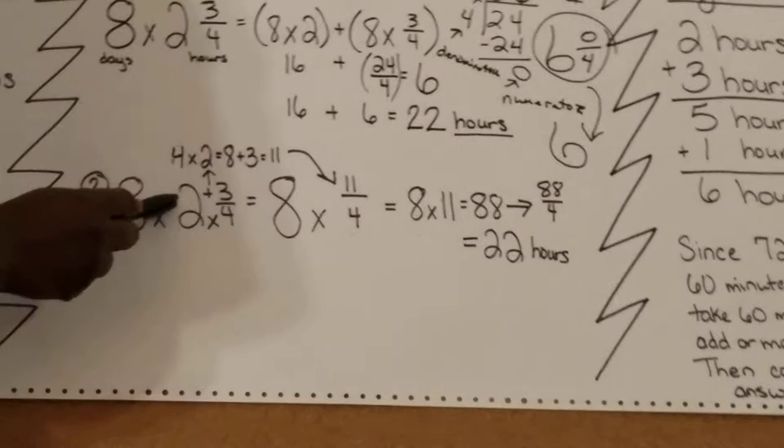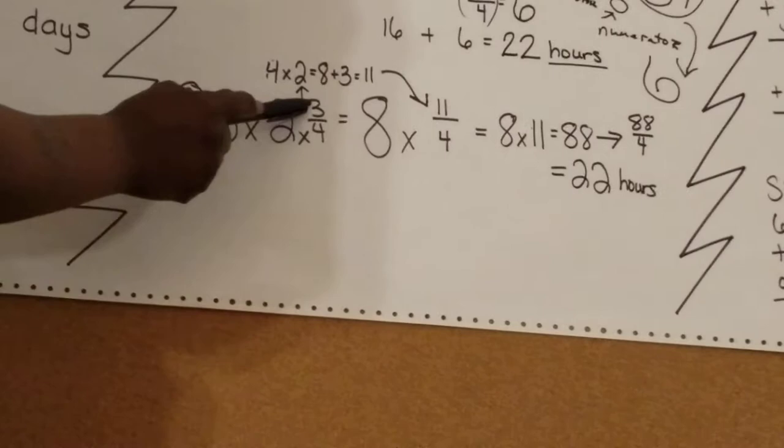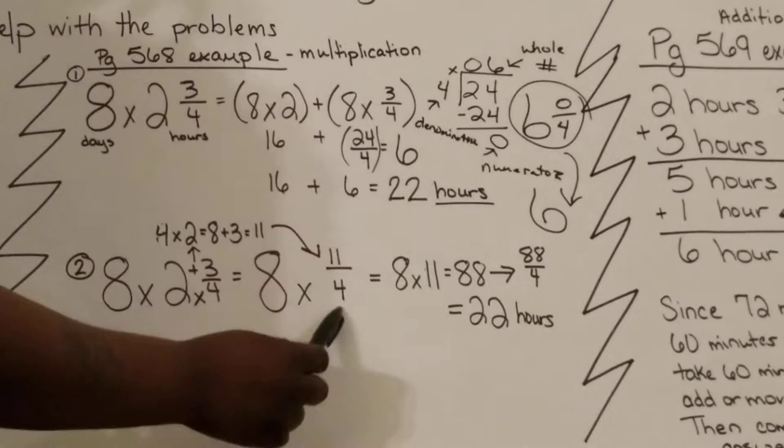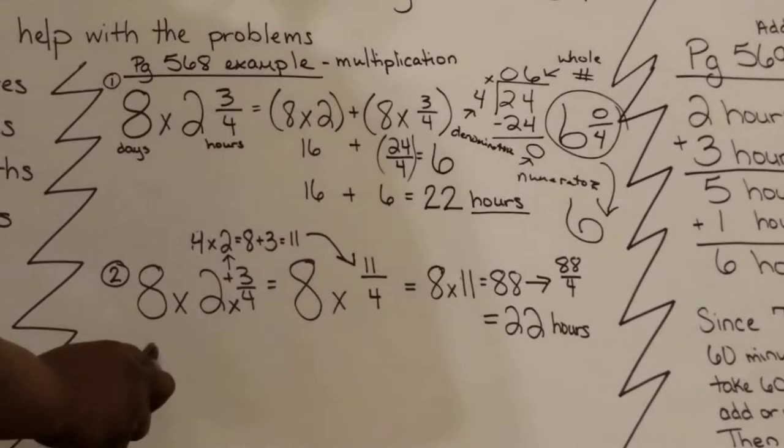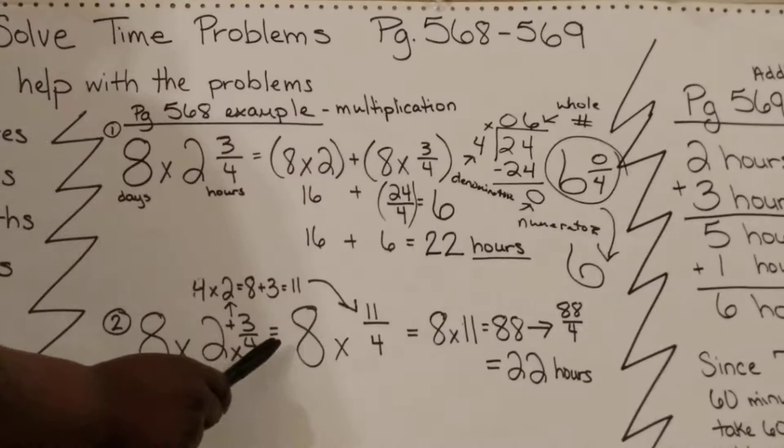We do 4 times 2, which is 8. Put 8 in your head, and then add it to your numerator. 8 plus 3 equals 11. Put that over the same denominator, which was 4. Now I'm going to put my new improper fraction into my problem. I started with 8 times 2 and 3/4, converted my mixed number, and now I have 8 times 11 over 4.